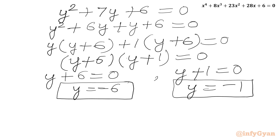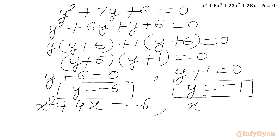Now y was x squared plus 4x, so again we will have two quadratic equations. We will write x squared plus 4x equal to minus 6, and x squared plus 4x equal to negative 1.